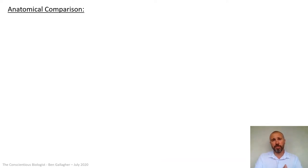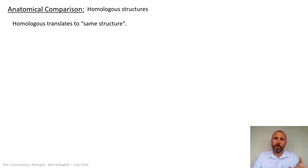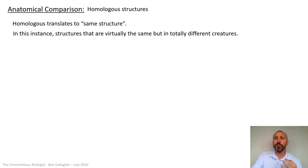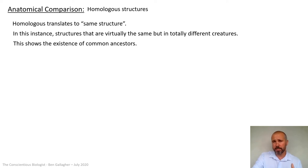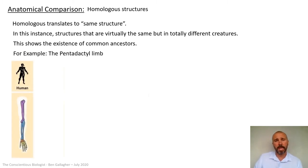The next piece of evidence for evolution theory is anatomical comparison — really compelling, really strong evidence. Anatomical comparison means looking at the physiology of creatures and comparing them to see how close they are. We're talking about homologous structures. The word homologous means same structure — 'homo' meaning same, 'logos' meaning structure. These are structures that are virtually the same but in totally different creatures, showing the existence of common ancestors. We're going to look at an example: the pentadactyl limb.